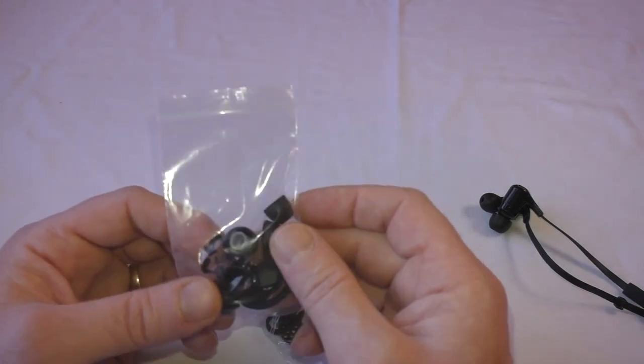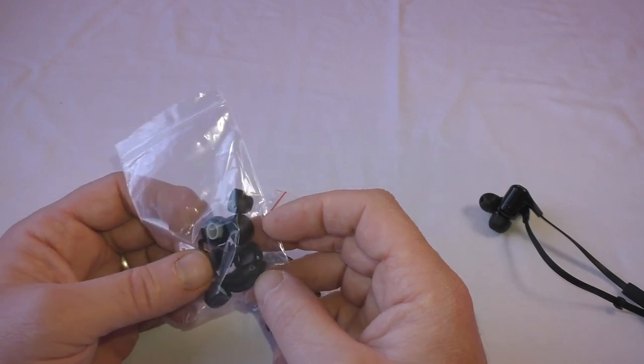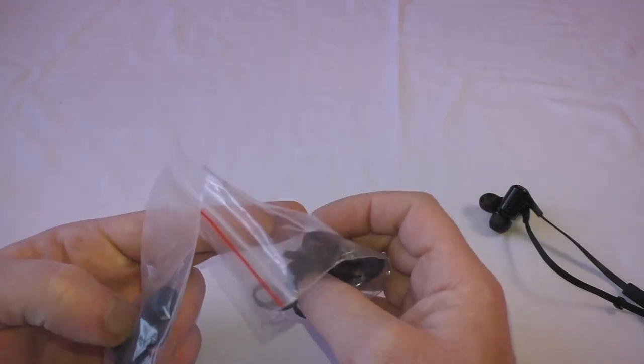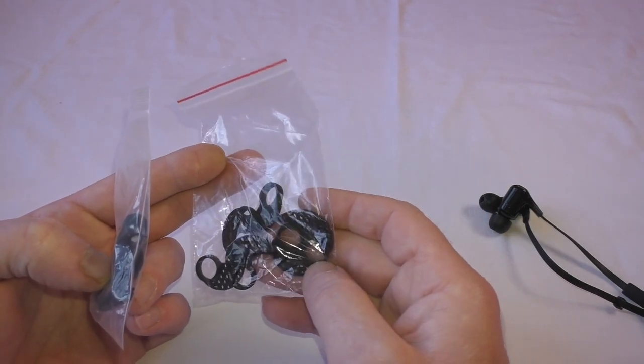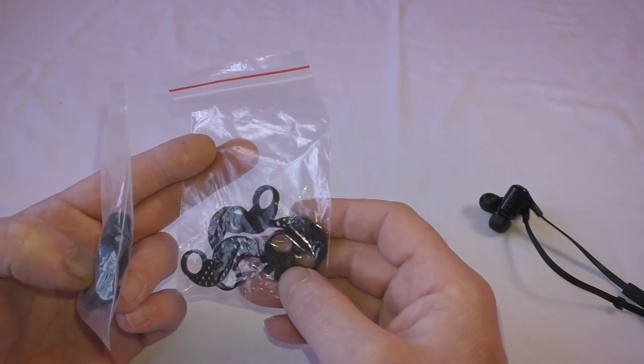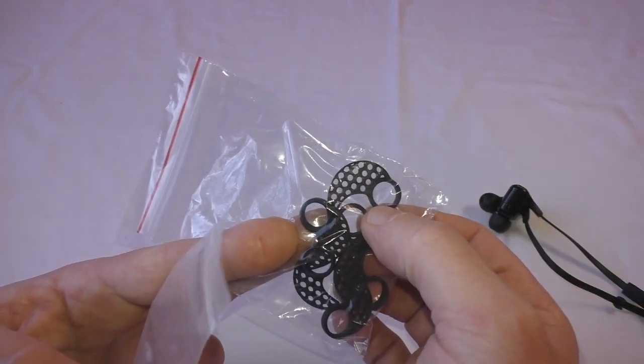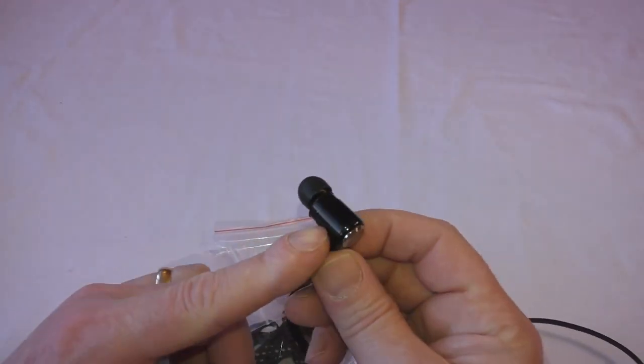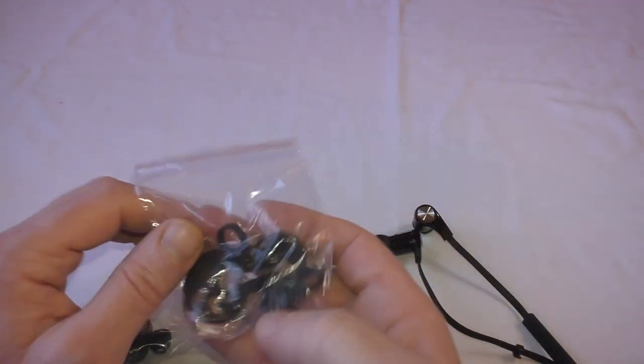So yeah, you get another two pairs of ear tips in there, a couple of stabilizers there, and this bag here has another one, two, three pairs of stabilizers of varying sizes. As you can see, they've got like this perforated design. Now they obviously go on behind the ear tip here, onto this part of the headphone, and that's to help stabilize and grip your ear.